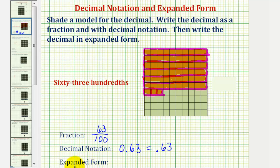And then finally, we want to write the decimal in expanded form, which is a nice connection using our longs and bits. Again, these six longs represents six tenths, so the expanded form for zero point six three would be six tenths, or zero point six, plus we have three bits, which represents three hundredths, so plus zero point zero three.